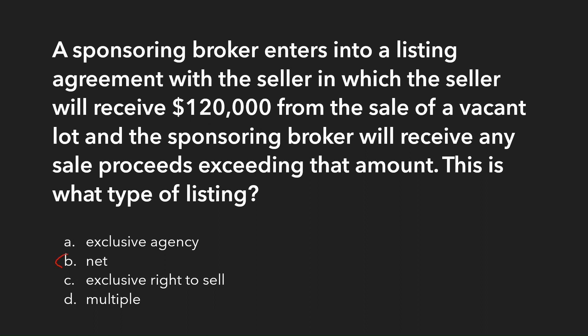The answer is a net listing. In a net listing, we don't know exactly how much we're going to make — we just know we'll make whatever is in excess of the seller's net. With exclusive agency and exclusive right to sell, the agent gets paid whatever they negotiate upfront and it doesn't depend on the seller's net.